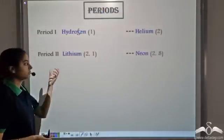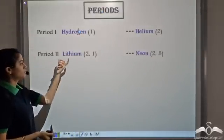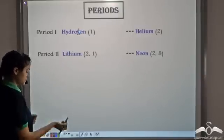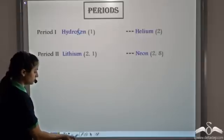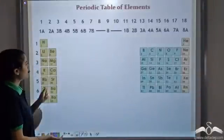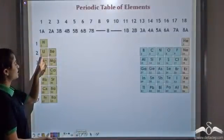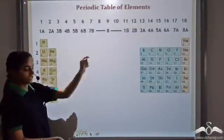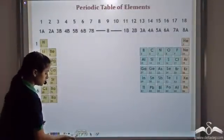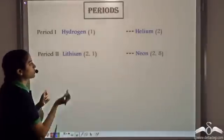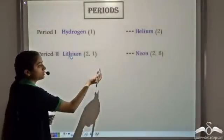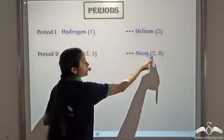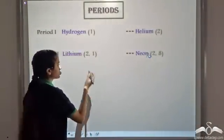The second period: the first element is lithium and the last element is neon. The electronic configuration of lithium is 2.1, and the electronic configuration of neon is 2.8.